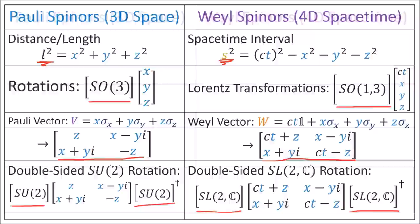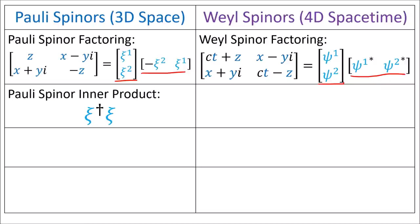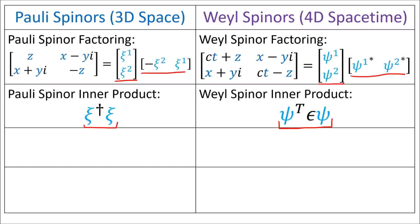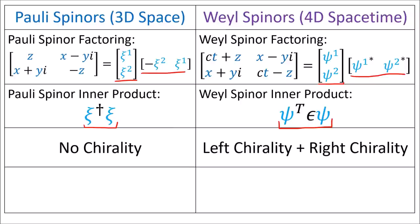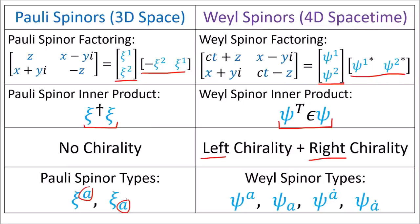Pauli vectors are rotated with double-sided transformations using SU(2) matrices. Pauli vectors can be factored into a pair of Pauli spinors, and Weyl vectors can be factored into a pair of Weyl spinors. The inner product of Pauli spinors is psi-dagger psi, but the inner product of Weyl spinors is psi-transpose times the epsilon matrix times psi. Pauli spinors don't have a notion of chirality, but Weyl spinors can be either left chiral or right chiral. Finally, Pauli spinors have 2 types of indices for spinors and dual spinors, while Weyl spinors have 4 types of indices for the left and right versions of spinors and dual spinors.